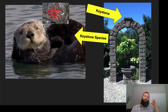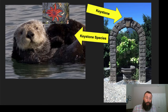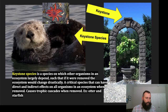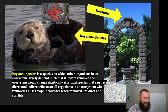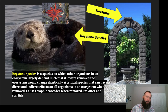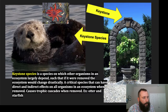The keystone species — like the otter or the starfish you see on screen — if removed, that entire ecosystem would collapse just like those stones would. A keystone species is a species on which other organisms in an ecosystem largely depend, such that if it were removed, the ecosystem would change drastically. It's a critical species that can have direct and indirect effects on all organisms when removed. Think of poaching, overhunting, or an invasive species removing that otter. The removal of a keystone species can cause what are called trophic cascades.